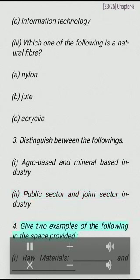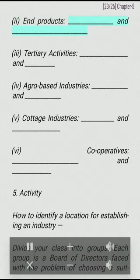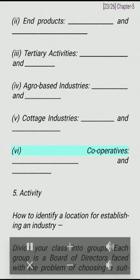Give two examples of the following: (I) Raw Materials, (II) End Products, (III) Tertiary Activities, (IV) Agro-based Industries, (V) Cottage Industries, (VI) Cooperatives.